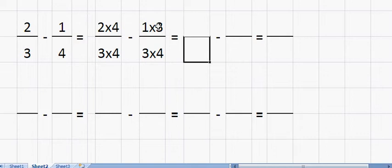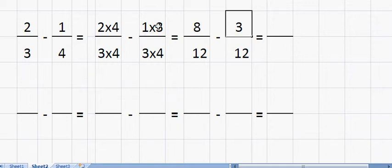Now let's multiply those out. So that gives me 12 on the bottom, 12 on the bottom here. Up on the top here, two fours are eight. And on the top here, it's going to be one by three. So that's going to be three.